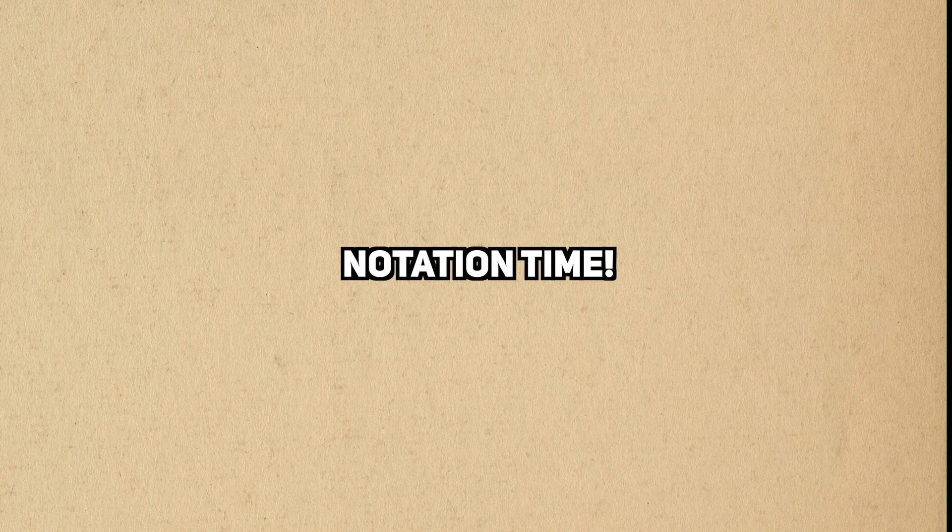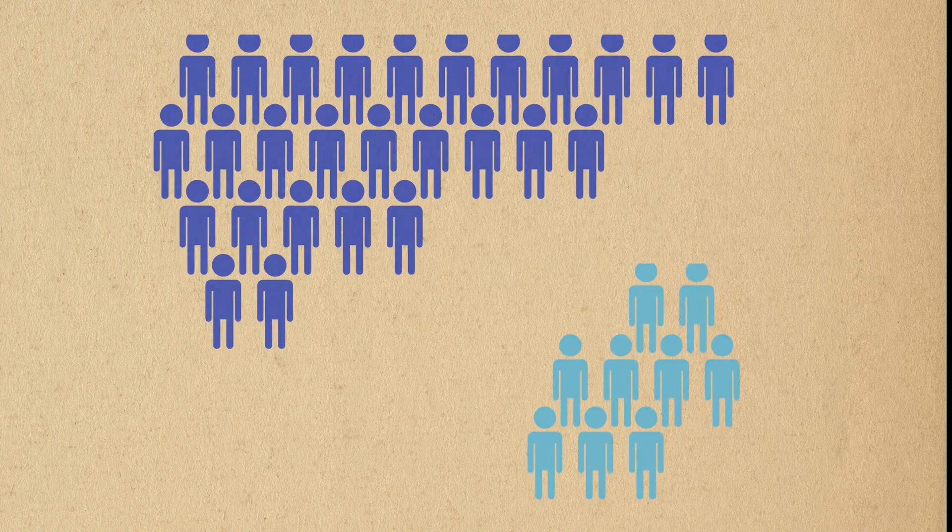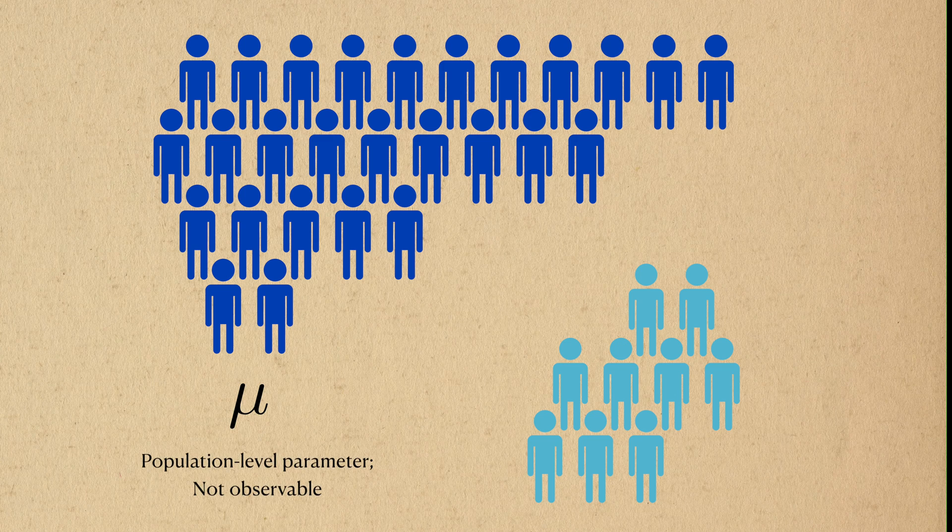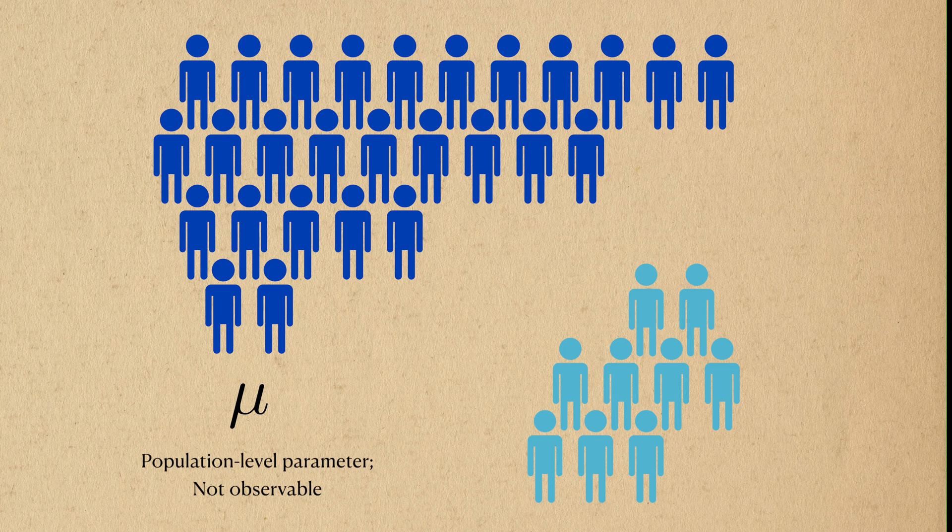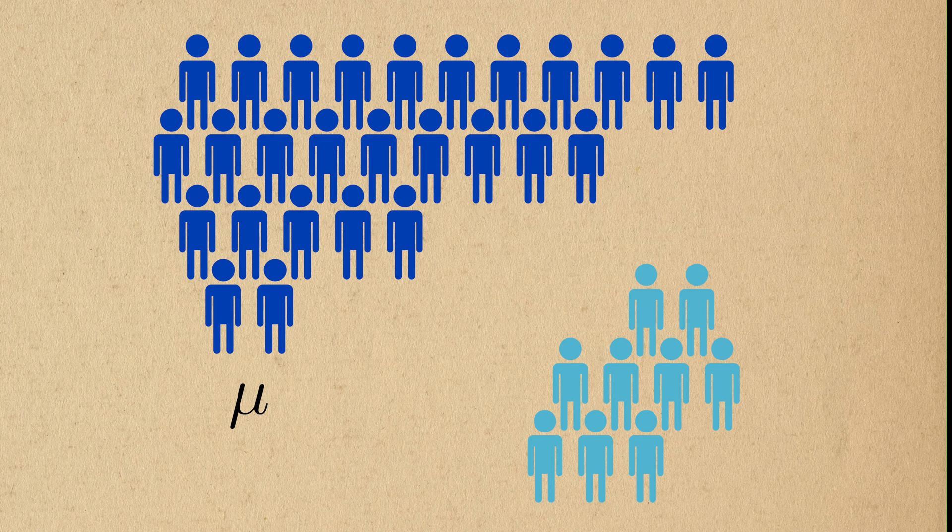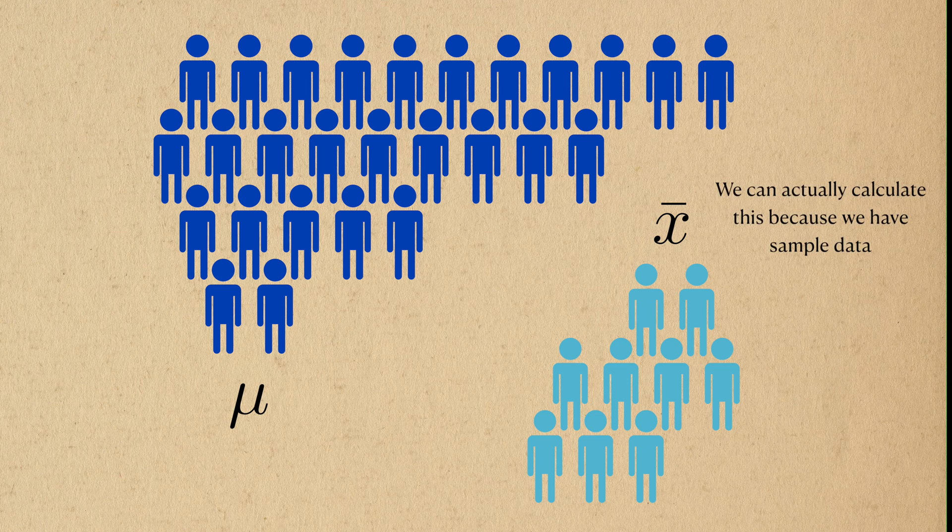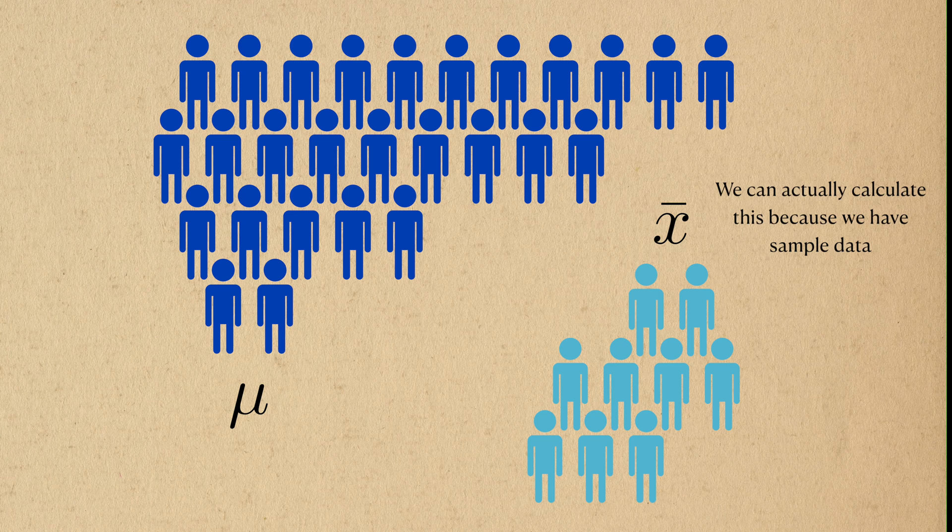Before we go further, let's define some notation. What we're interested in is the population mean, which we'll denote as μ (mu). We won't be able to calculate this directly, but this notation lets us represent this idea. Instead, we'll use the sample mean as an estimator or guess of the population mean. We can actually calculate the sample mean because we gathered data from the sample.